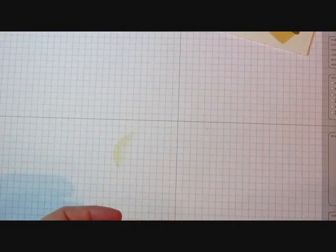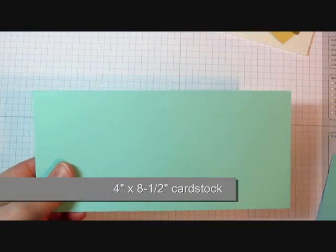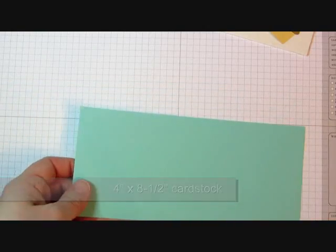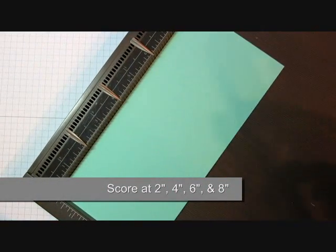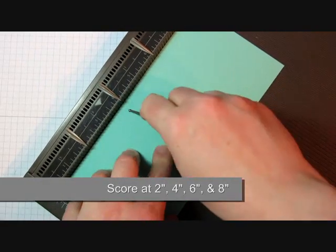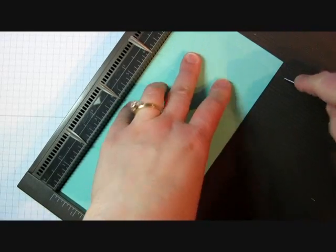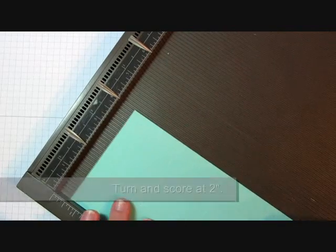We're going to start with a piece of cardstock that is 4 inches by 8.5 inches, and we're going to use the Simply Score tool. You can also use your paper trimmer. We're going to score it kind of like the 2-4-6 box if you've ever made that box before. We're going to score it at 2 inches, 4 inches, 6 inches, and 8 inches with the long side at the top.